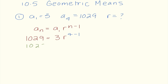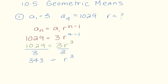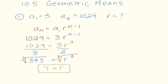Solving this, I get 1029 equals 3r cubed. My goal is to get r all by itself, so my first step is to divide both sides by 3, which gives me 343 equals r cubed. To solve for r, I can cube root both sides. I do not need to put a plus or minus out in front because 3 is an odd index number. When I cube root 343, I get 7 as our common ratio.